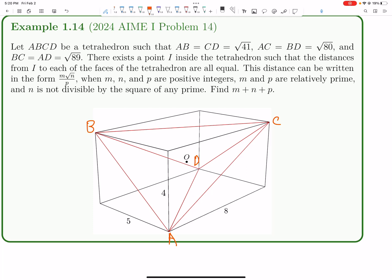Let's explore this cool tetrahedron problem. Let ABCD be a tetrahedron. So we have these lengths AB, we have CD, we have AC, BD, and so on.